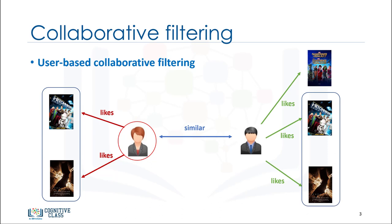Collaborative filtering bases this similarity on things like history, preference, and choices that users make when buying, watching, or enjoying something — for example, movies that similar users have rated highly. Then it uses the ratings from the similar users to predict the possible ratings by the active user for a movie that she had not previously watched.